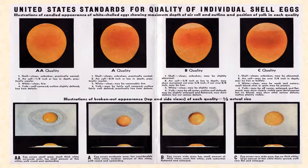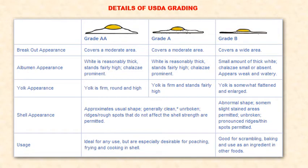The details about USDA grades for individual eggs are explained showing different category egg grades and their detailed characteristics about the shell, air cell, white, and yolk. The bottom row shows detailed characteristics of different grade eggs in internal quality after breaking out. These details are not much required for UG students but may be useful for postgraduate students. USDA grading details for grade AA, grade A, and grade B cover breakout appearance, spreading, albumin appearance, yolk appearance, shell appearance, and usage.